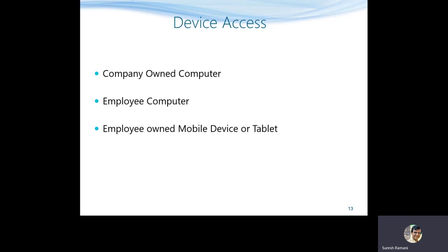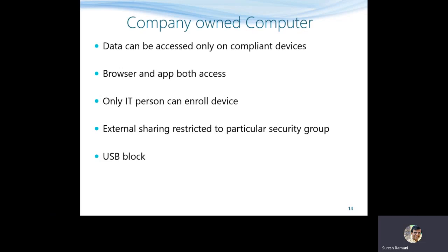Now let's look at the device part. Devices can be divided into three types: company-owned computers, employee-owned computers, and employee-owned mobile devices or tablets. For company-owned computers, policies can be set so that data is accessed only if the device is compliant with security policies. Users have access via both browser and applications like Microsoft Outlook. Only authorized IT personnel can enroll the device, external sharing should be restricted, and USB ports should be blocked to prevent data leakage.